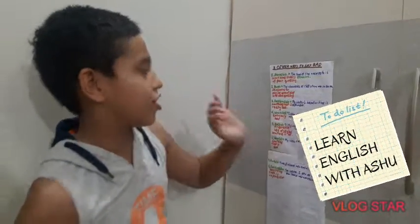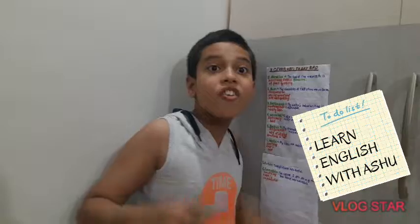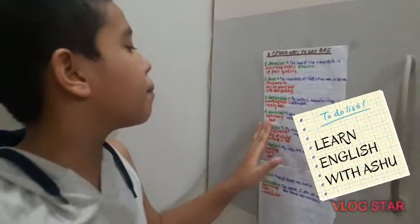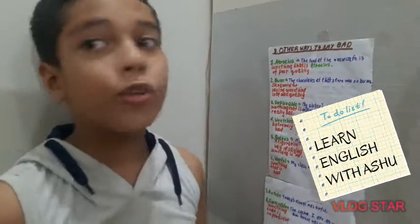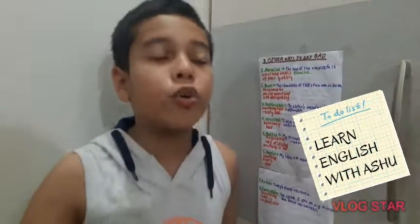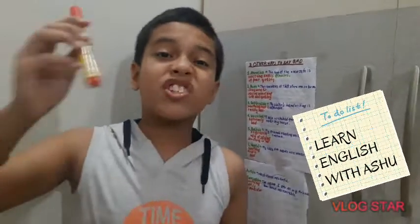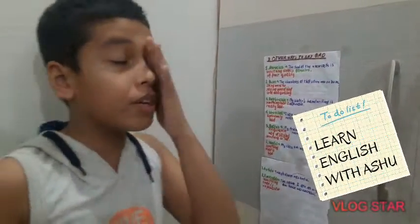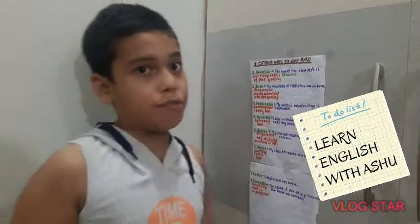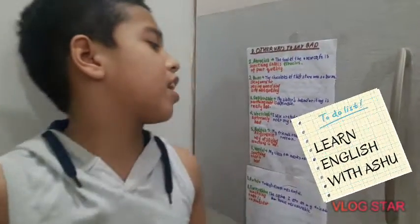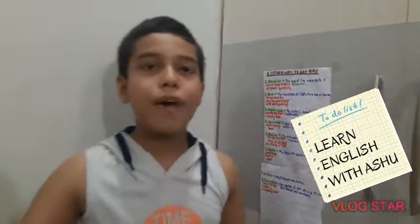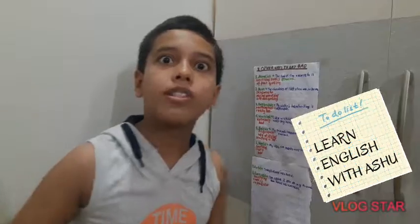Our next word is 'wretched', pronounced as 'wretched'. The meaning of wretched is extremely bad. When you don't like anything about an object or situation, instead of saying it was extremely bad, we can use wretched. For example: 'I saw a wretched accident near my house,' meaning a really bad accident near my house.